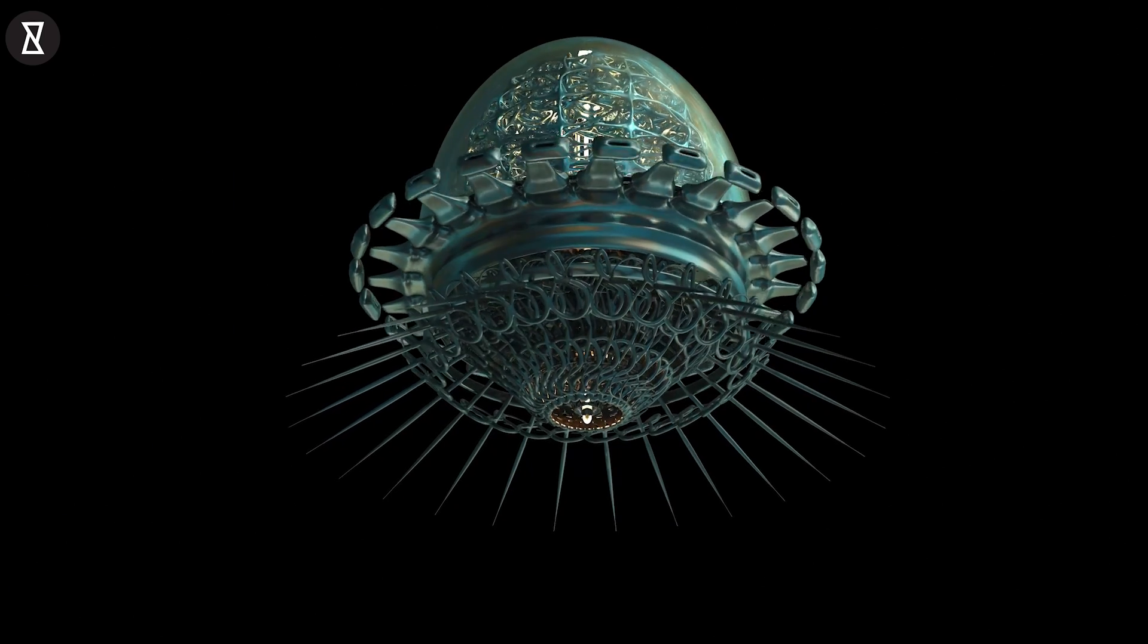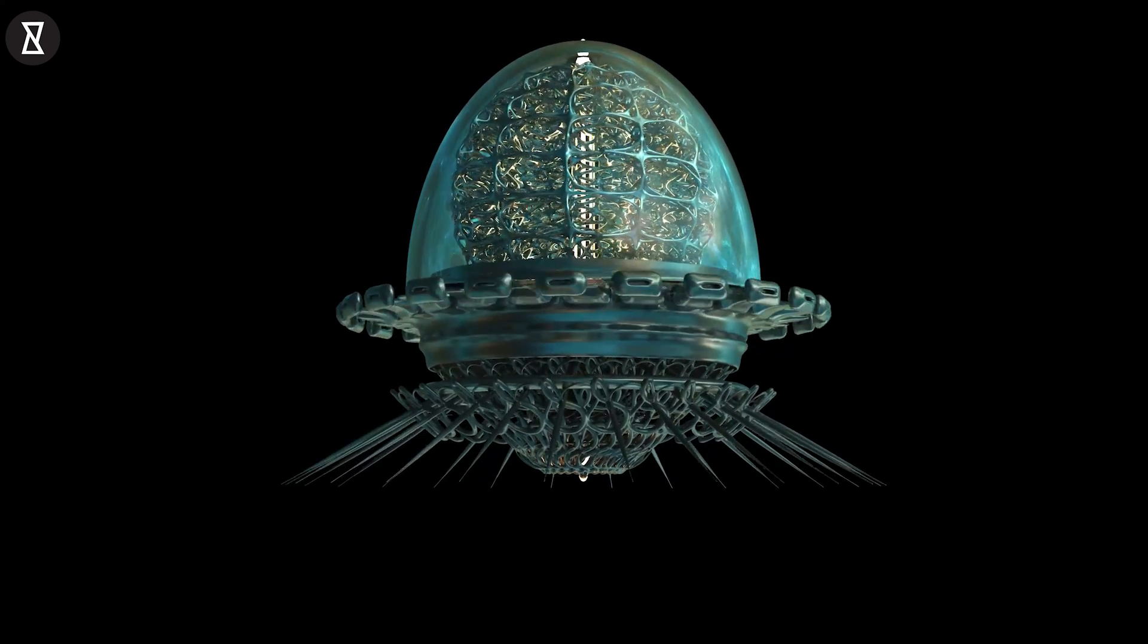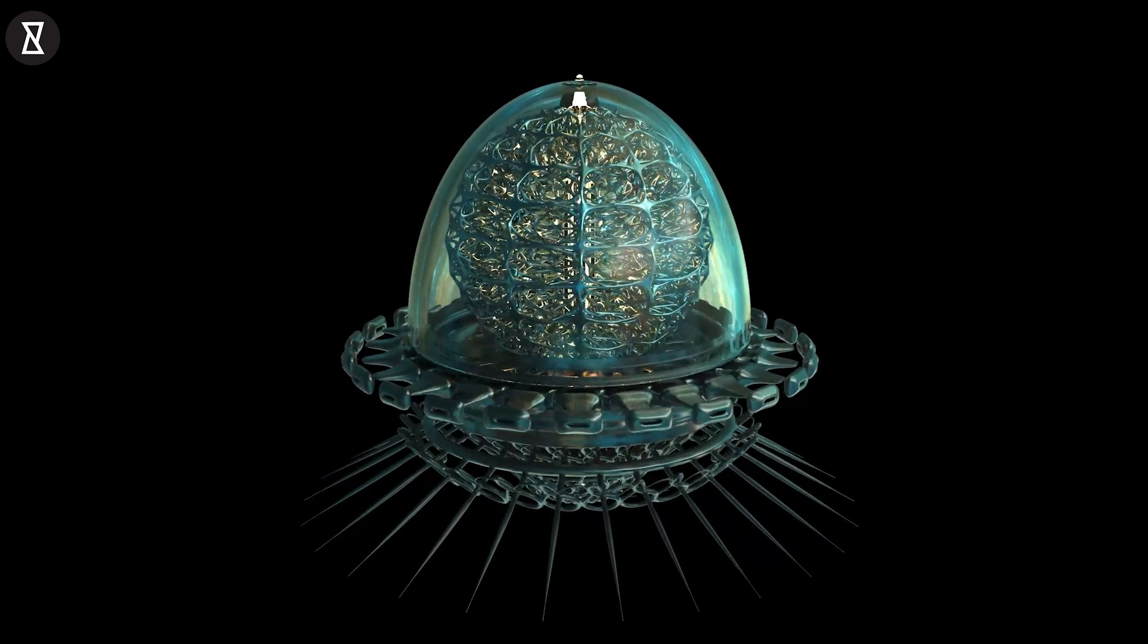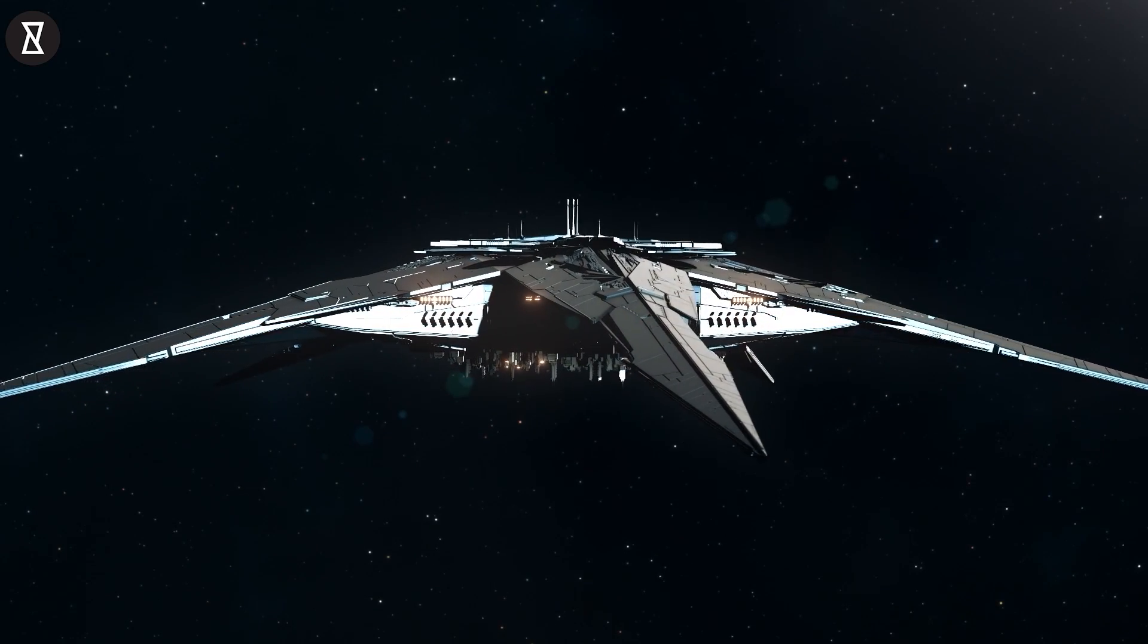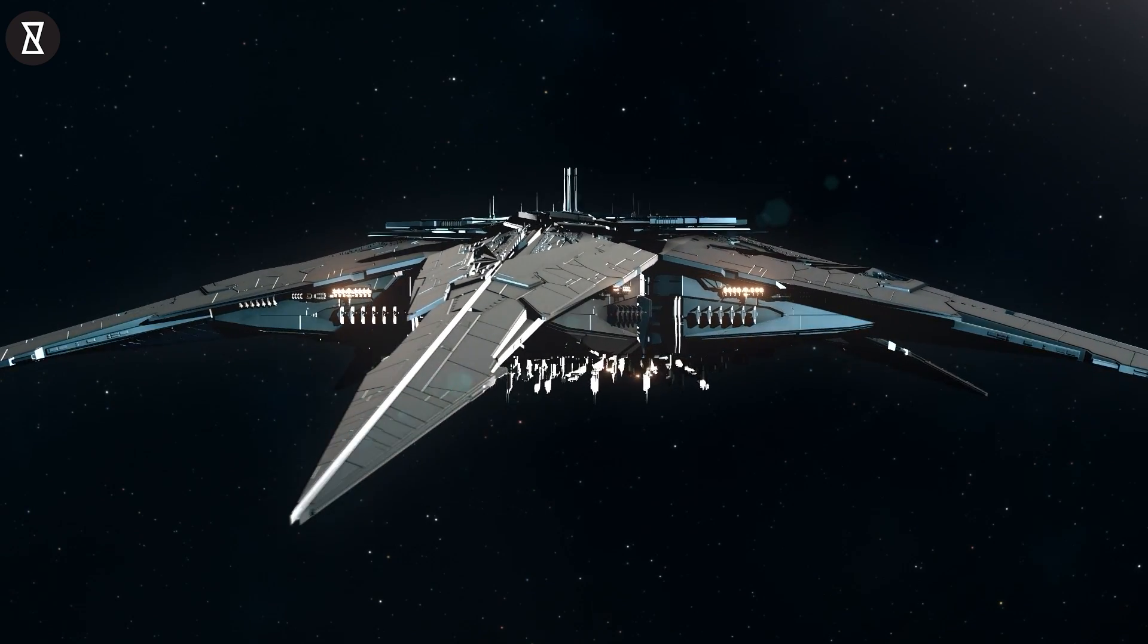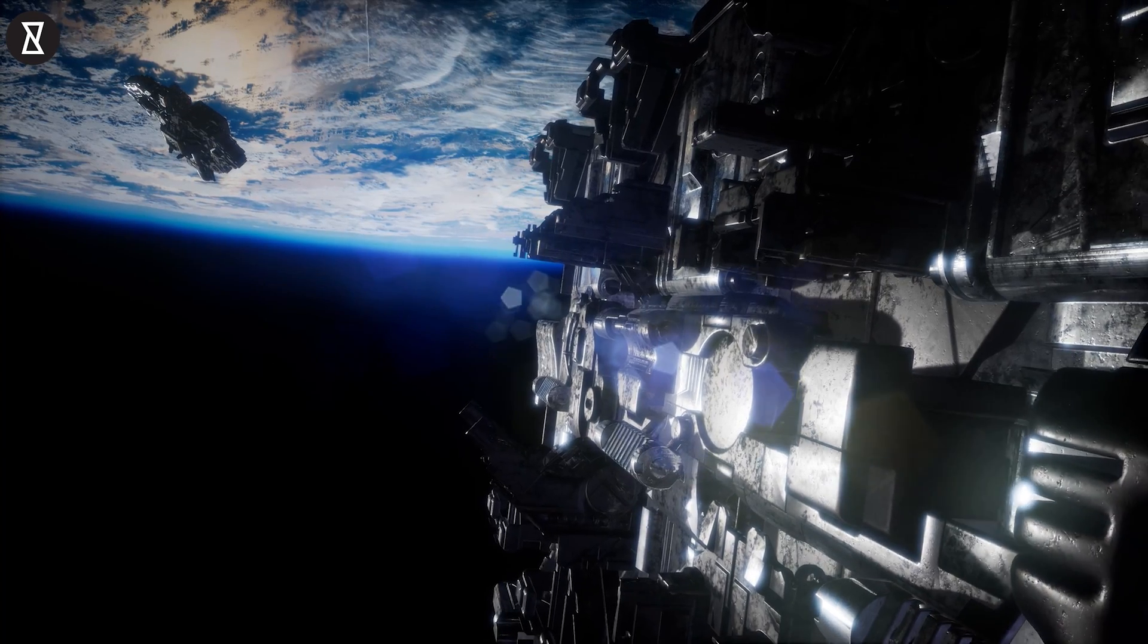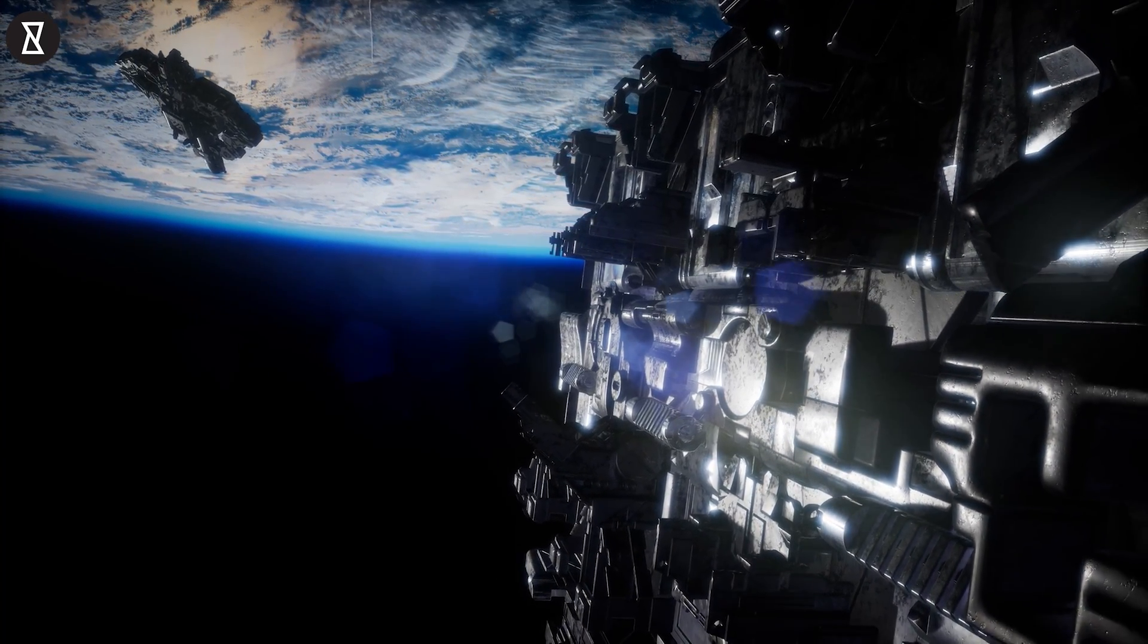To be clear, Bialy and Loeb aren't claiming in this study that 'Oumuamua is definitely an alien spacecraft, but they do think this is a real possibility. The object could be a piece of alien space junk, a defunct sail craft that has accidentally found its way to us. Or it may be an active reconnaissance craft, sent here to check out our solar system, the researchers wrote in the study.